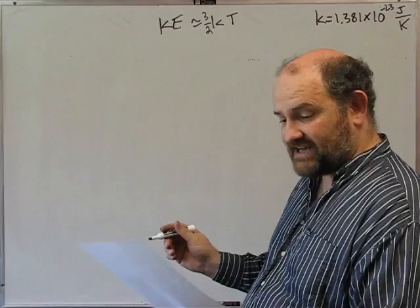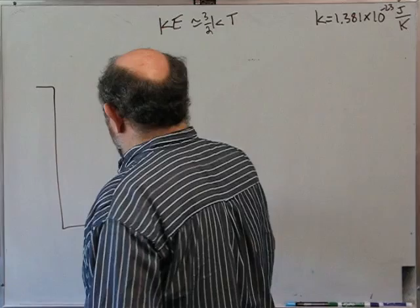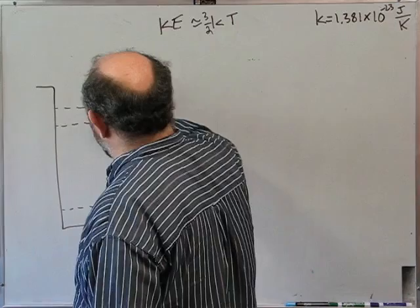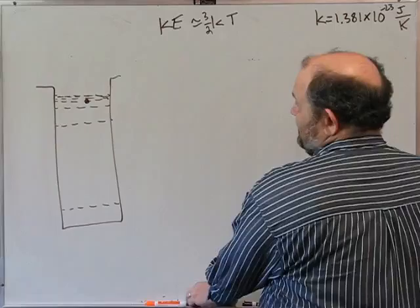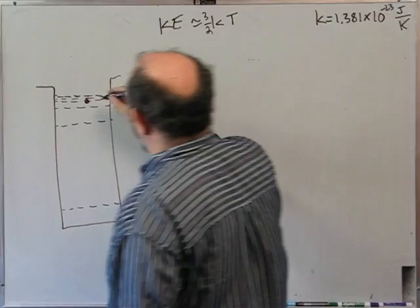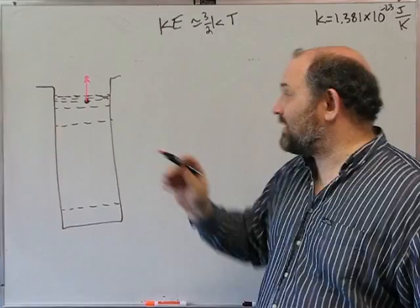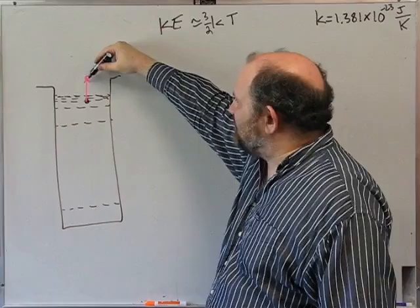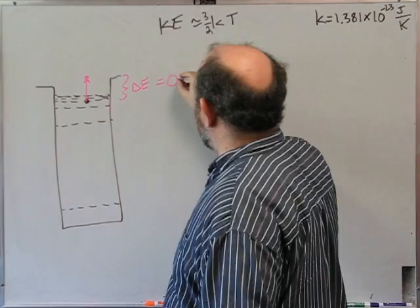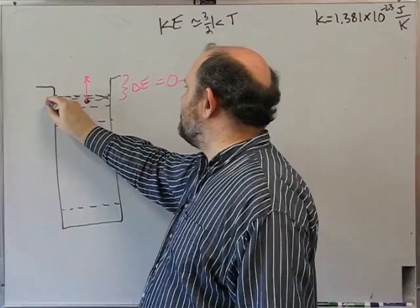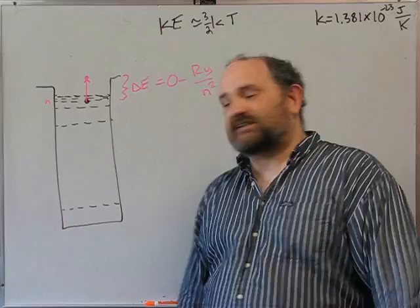At room temperature, in what level n must the electron in a hydrogen atom be for it to be easily ionized by collisions with other atoms? The idea is that you have an electron that's somehow not in the ground state, and you want to give it enough energy to get up to zero energy — that's just barely a free electron. So this delta E equals zero minus minus Ry/n², which is plus Ry/n², and that has to equal 3/2 kT because that's how much kinetic energy there is.